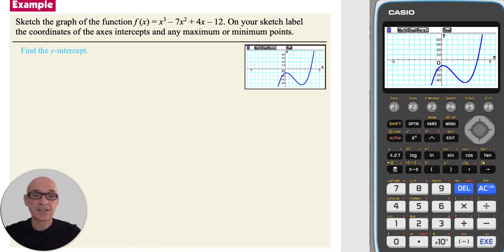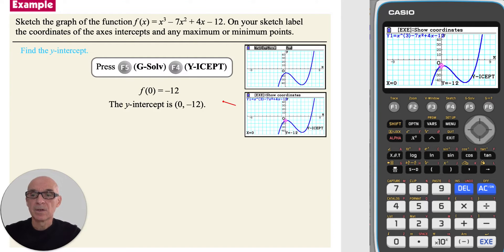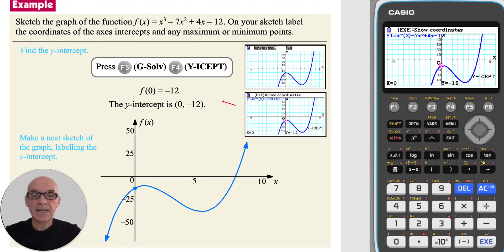To find the y-intercept on the calculator, press f5, g solve, and then f4 for y-intercept. So as before, the y-intercept has coordinates 0, negative 12. At this point, we can make a neat sketch of the graph and label the y-intercept.